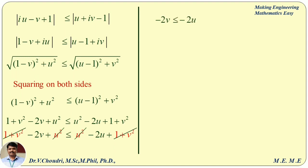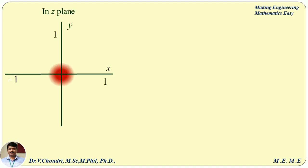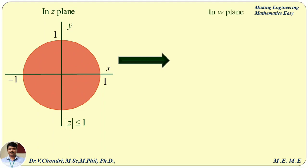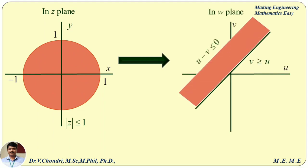Therefore, minus 2v less than or equal to minus 2u. Cancelling minus 2 on both sides, it becomes v greater than or equal to u. Therefore, the image of modulus z less than or equal to 1 is u minus v less than or equal to 0. We conclude this problem with a diagram: draw the unit circle in the z plane. The image of modulus z less than or equal to 1 in the w plane is u minus v less than or equal to 0, that is the portion above the line u equals v, under the transformation w equal to (z plus 1) divided by (z minus i).